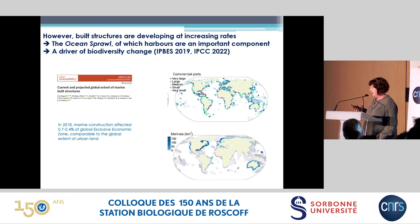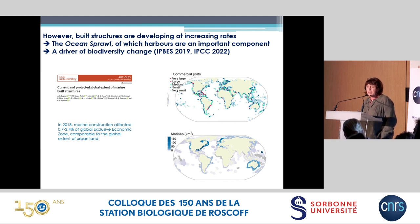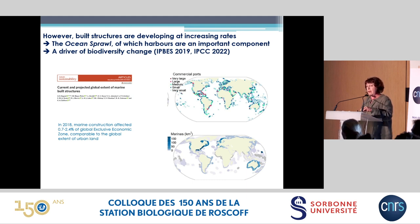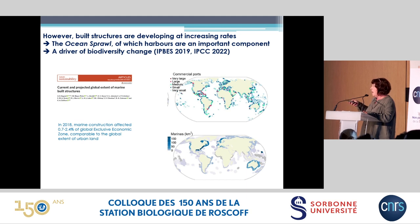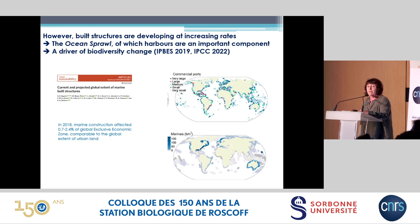This ocean sprawl is a major driver of marine biodiversity changes. Something not very well known is that the impact — either directly through the destruction of natural habitats, or indirectly through noise pollution or light-at-night pollution — has an impact on a surface comparable to the surface of urban land on the continents. You have here two pictures showing commercial ports and marinas which are really spread all over the world.